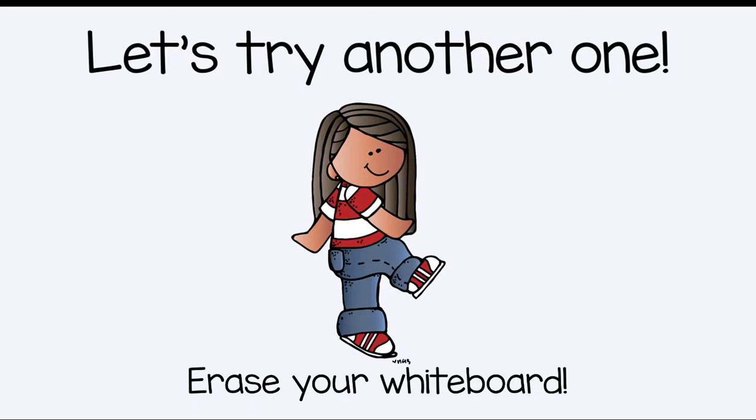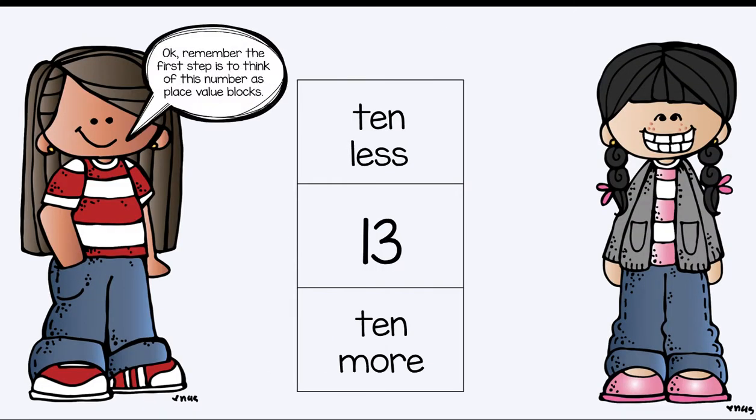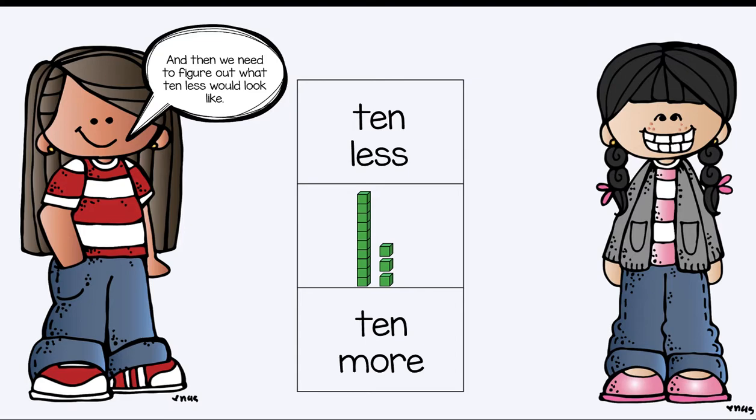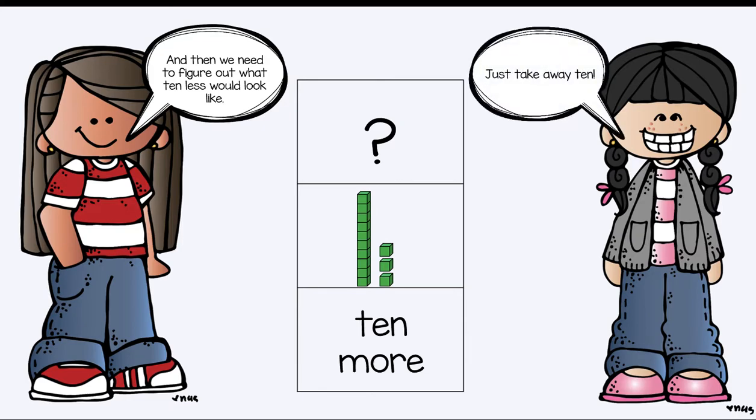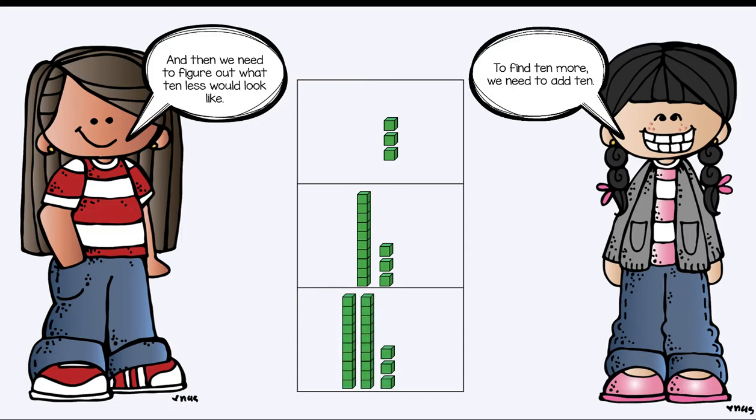Let's try another one. Erase your whiteboard. Okay. Remember the first step is to think of this number as place value blocks. Great. One 10 stick and three ones. And then we need to figure out what 10 less will look like. So if we have one 10 stick and three ones, if we take away 10, what would that number look like? Just take away 10. You should have three ones. Then we need to figure out what 10 more would look like. To find 10 more, we need to add a 10. Great job.